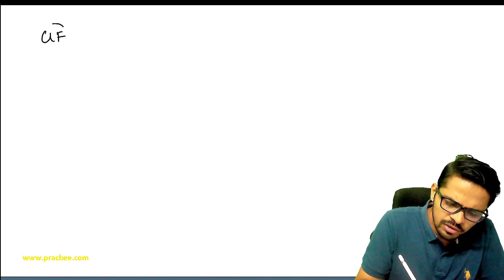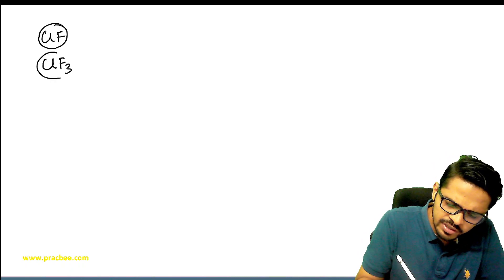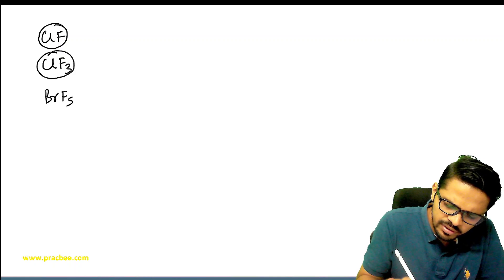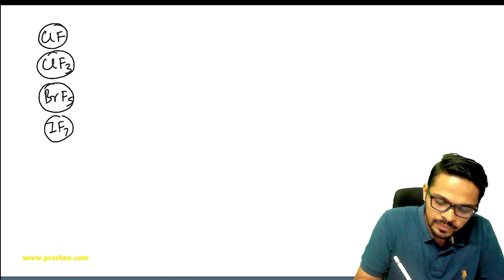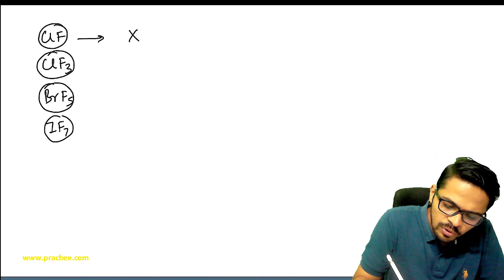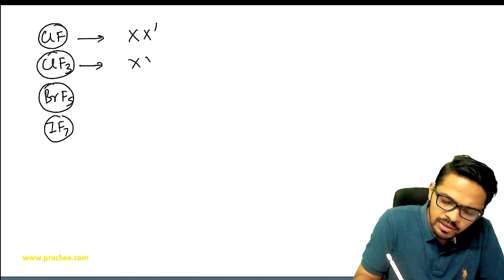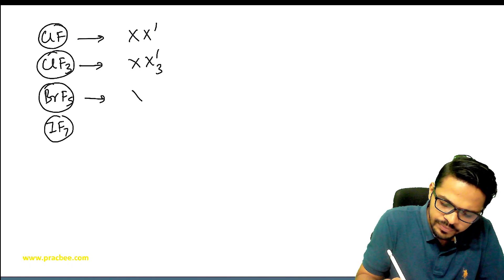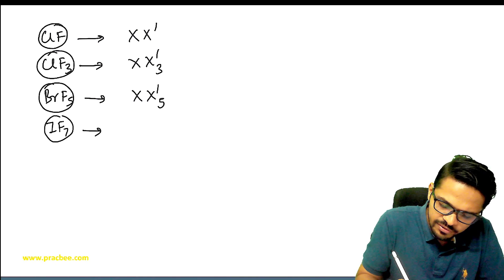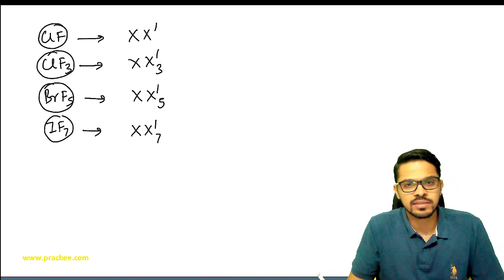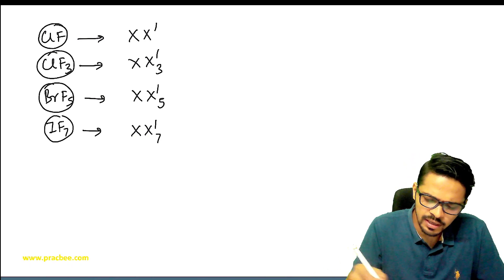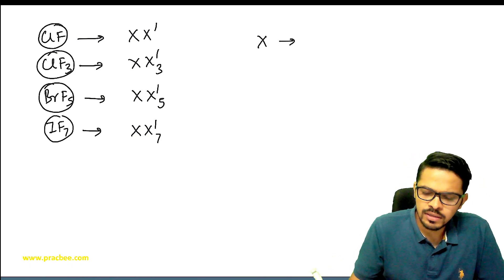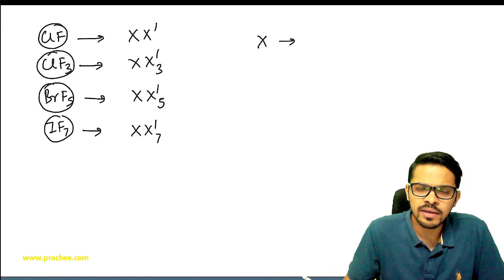So here you are seeing different types of interhalogen compounds. Some examples are ClF, ClF3, BrF5, IF7. You will majorly find 4 different types of interhalogen compound categories: XX', XX'3, XX'5, and XX'7. And in all of these, if we talk about X, then X is more electronegative. This is less electronegative.